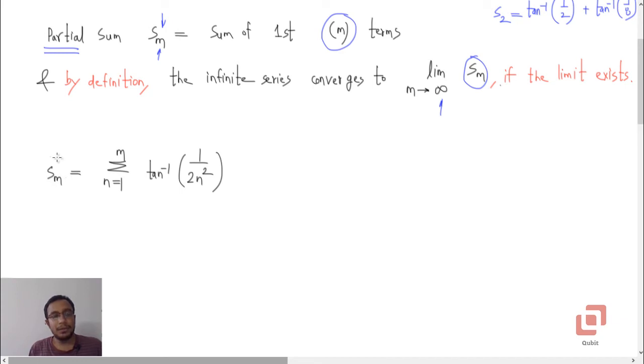Now it's not too difficult to get the summation notation form of sm, the mth partial sum. What is it? Summation as n goes from 1 to m: tan inverse of 1 upon 2n squared. And there was no need to recognize that this was already given in the problem, that the general term is cot inverse of 2n squared.